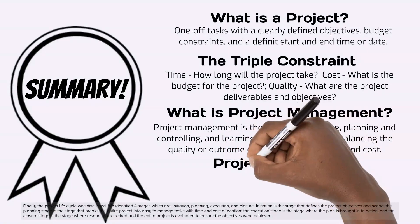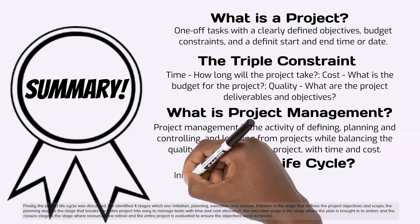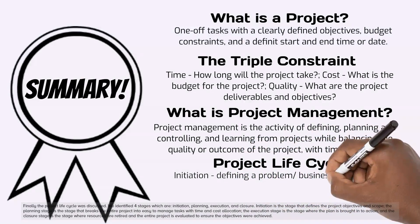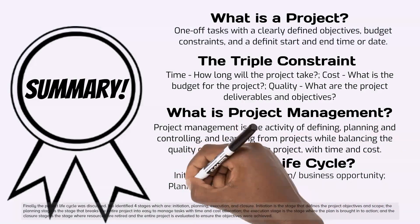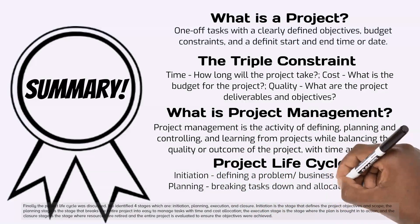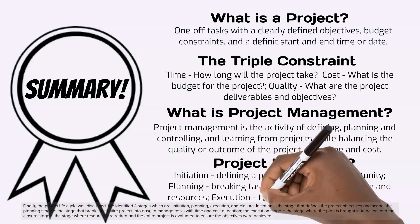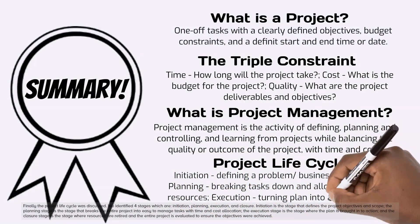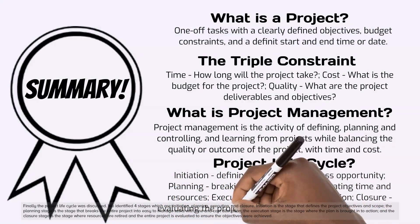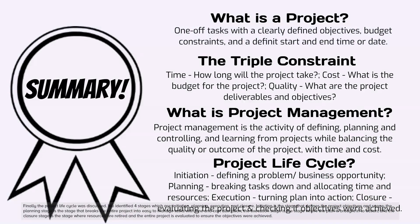Finally, the project lifecycle was discussed. We identified four stages: initiation, planning, execution, and closure. Initiation defines the project objectives and scope. The planning stage breaks the entire project into easy-to-manage tasks with time and cost allocation. The execution stage is where the plan is brought into action. The closure stage is where resources are retired and the entire project is evaluated to ensure the objectives were achieved.